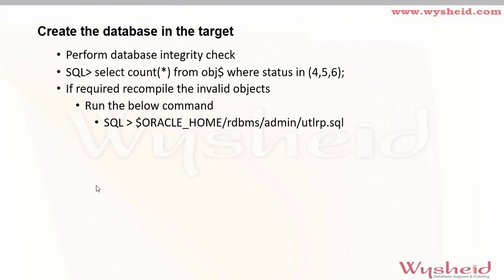After the database is open, verify whether there are any invalid objects by querying DBA_OBJECTS or OBJ$. If there are invalid objects, run utl_rp.sql located in $ORACLE_HOME/rdbms/admin — this will recompile all invalid objects. That covers the theory of migrating Oracle database from Windows to Linux.